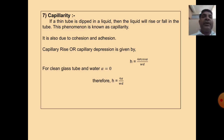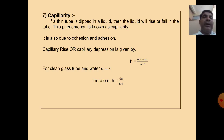The last property is capillarity. If a thin tube is dipped in a liquid, the liquid will rise or fall in the tube — this phenomenon is known as capillarity. It is due to cohesion and adhesion. Capillary rise or depression is given by: H = 4σ cosα / (wd), where w is specific weight, d is the diameter of the capillary tube, and alpha is the angle. For clean glass and water, alpha = 0 degrees, so cos 0 = 1, and therefore H = 4σ / (wd).